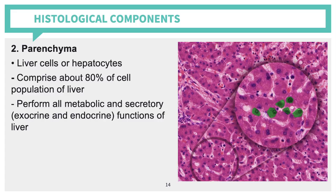Next is the parenchyma. Your parenchyma is composed of liver cells or hepatocytes, which make up 80% of the cell population of the liver. These hepatocytes perform all metabolic and secretory functions of the liver, including both exocrine and endocrine functions.